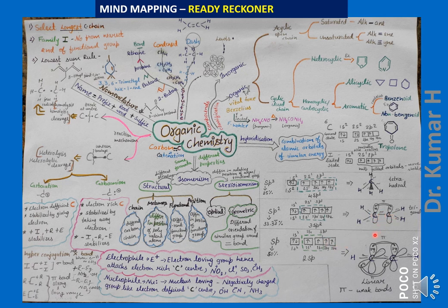If one s and one p orbital combine and undergo hybridization, we get two sp hybrid orbitals. The remaining py and pz orbitals of each carbon overlap sideways, leading to two pi bonds. In sp² hybridization there is one pi bond, and in sp³ hybridization there is no pi bond — all are sigma bonds, four sigma bonds.